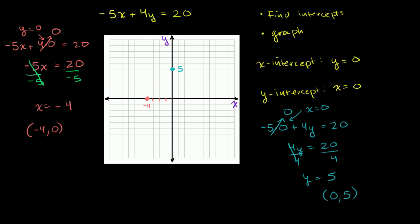And if we graph the line, all you need is two points to graph any line. So we just have to connect the dots. And that is our line. Try my best to draw as straight of a line as I can. And that's the graph of this equation, using the x-intercept and the y-intercept.